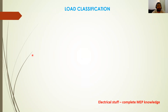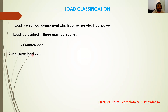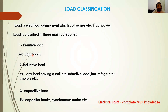Now, what is a load? A load is an electrical component which consumes electrical power, such as lights. There are three major categories of load classification: resistive loads (example: lighting), inductive loads (example: fans, refrigerators — any load having a coil), and capacitive loads (example: capacitor banks and synchronous motors).